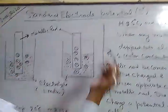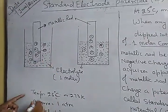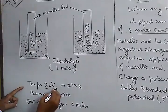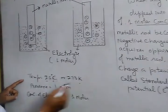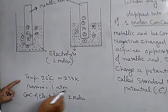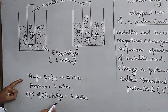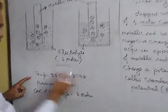At the temperature of 25 degrees Celsius or 273 Kelvin, and pressure is 1 ATM, and concentration of the electrolyte is 1 molar. At these conditions...